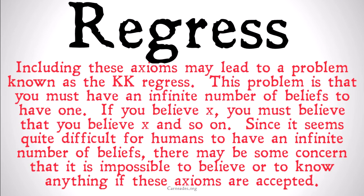Including these axioms may lead to a problem known as the KK regress, or the Knowing That You Know regress. Simply put, this problem is that you must have an infinite number of beliefs to have even one. If you believe X, you must believe that you believe X. You must believe that you believe that you believe X, and so on. Since it seems quite difficult for humans to contain an infinite number of beliefs in our minds, it seems quite difficult for us to hold a very finite set of beliefs, let alone an infinite number of them. There may be some concern as to whether it's possible to believe or to know anything if these axioms are accepted.